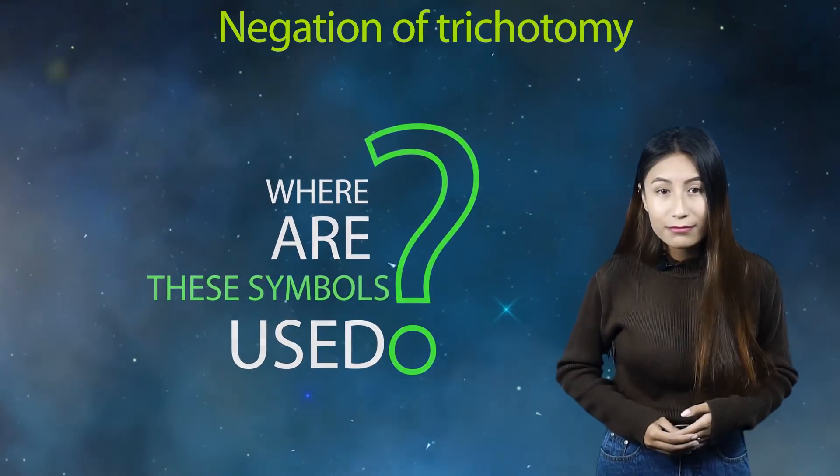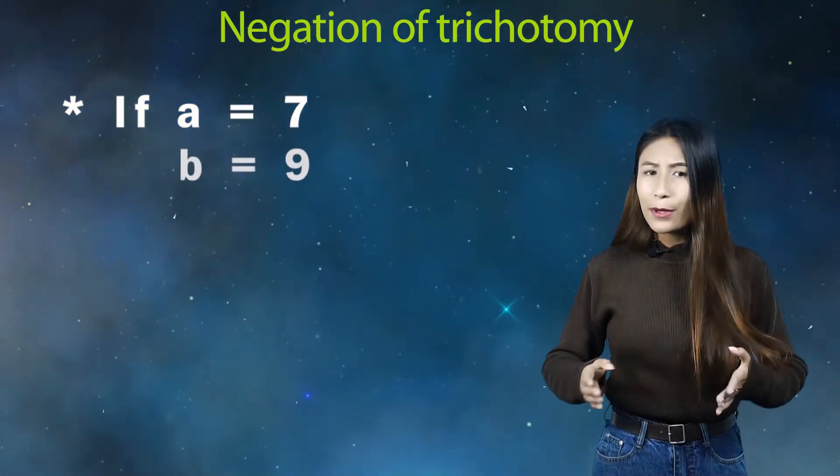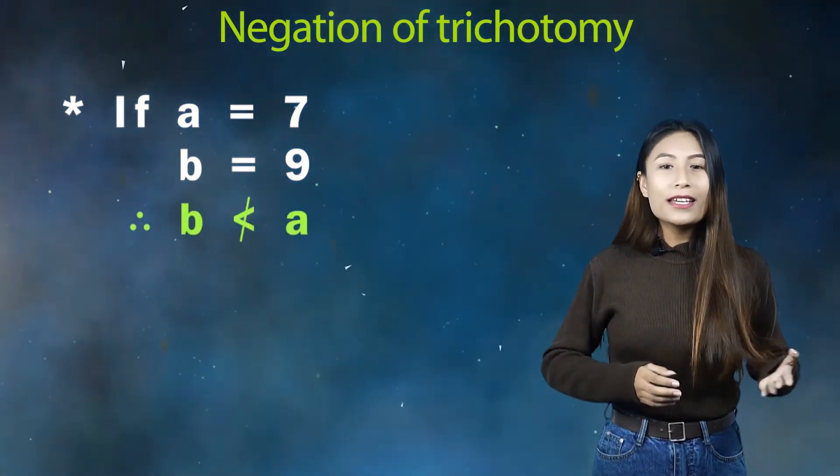If a equals 7 and b equals 9, you can write b is not less than a.